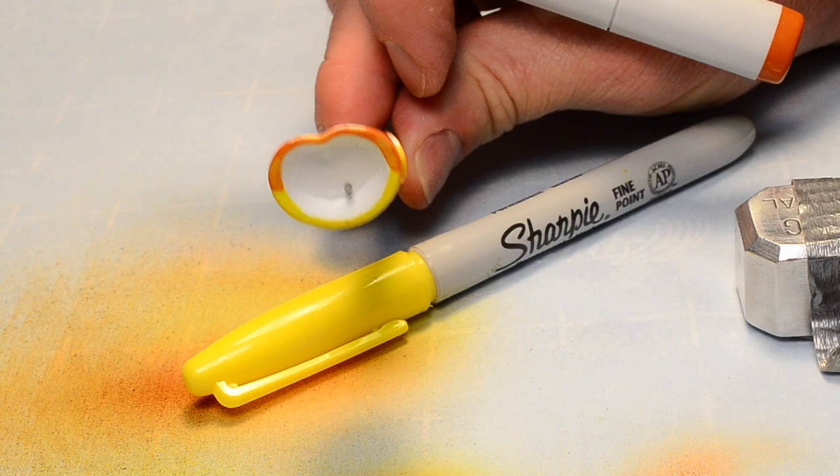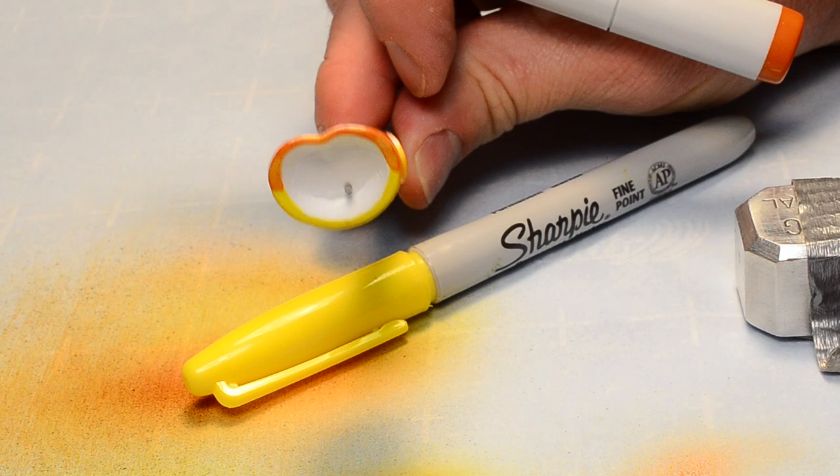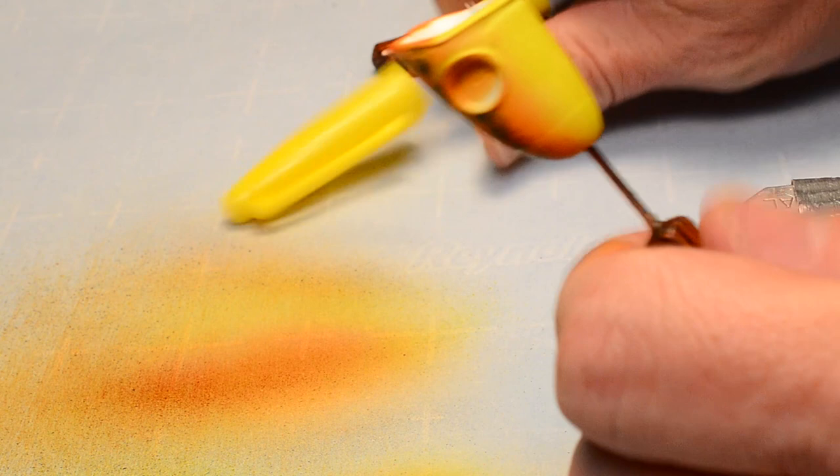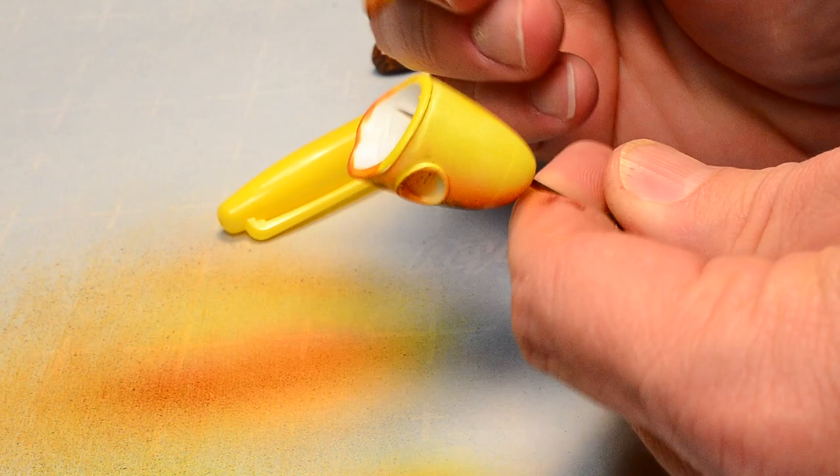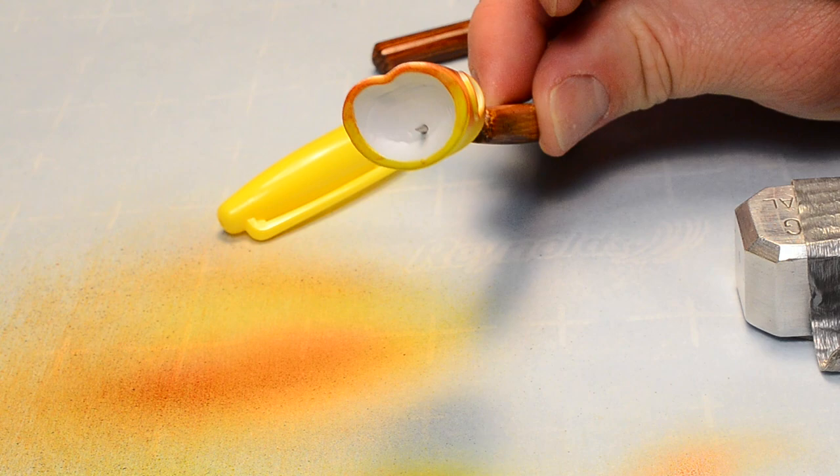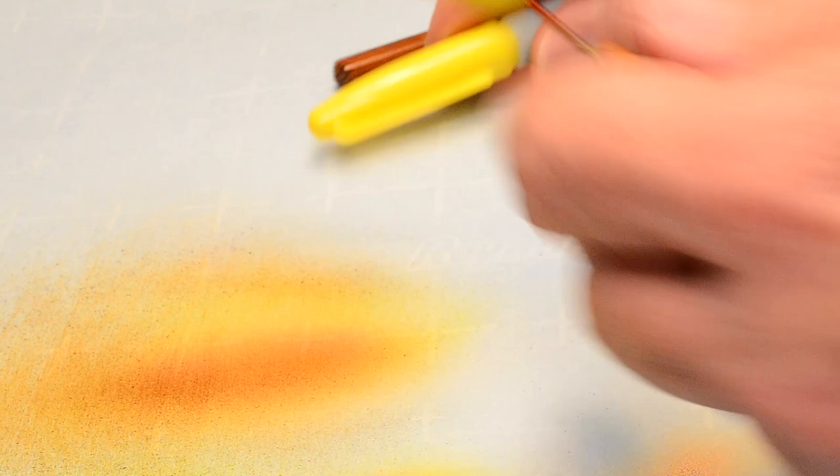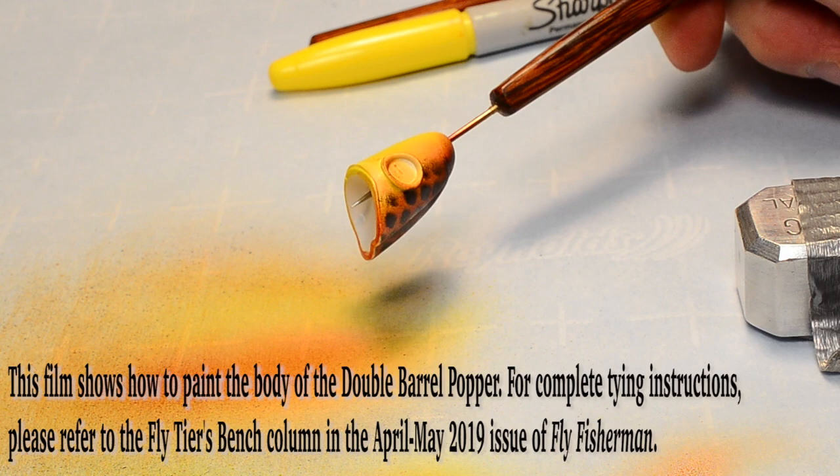Now you can leave a real stark clean edge there like that. It makes no difference. But if you'd like, you can actually fade those colors together a bit by using that lighter marker and sort of bleeding them so that you've got even distribution. Cap that marker up. And there's our homemade airbrushed popper head.